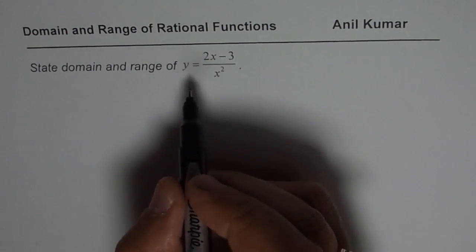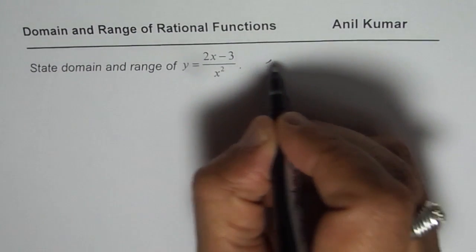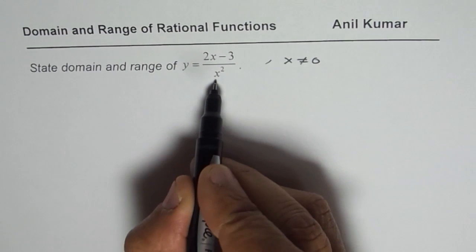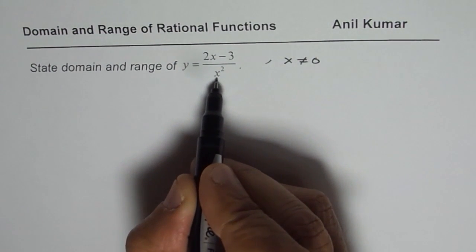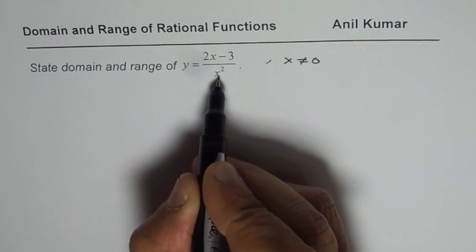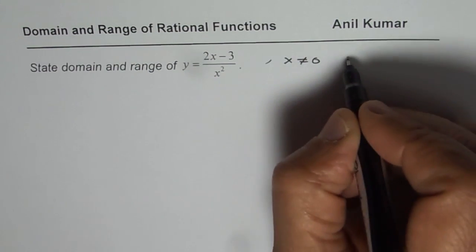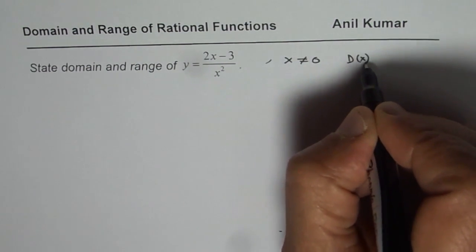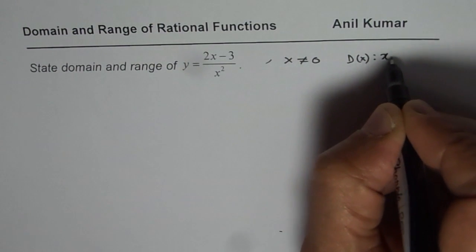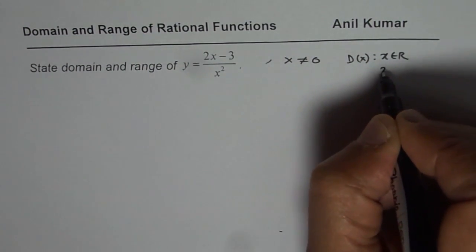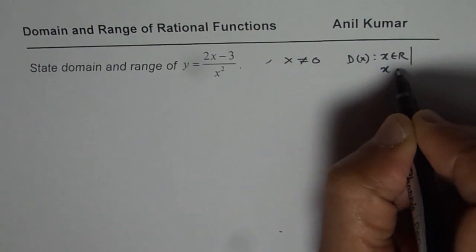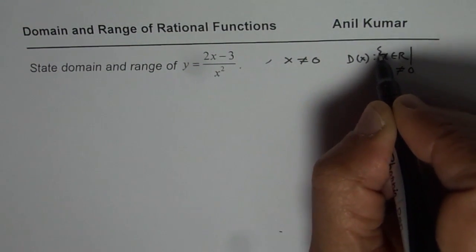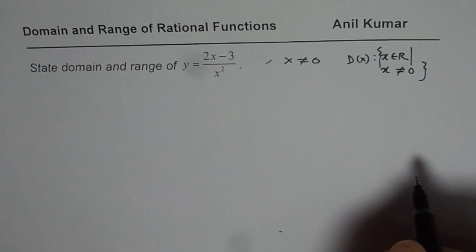As far as the domain is concerned, we know that x is not equal to 0 since if x squared is 0, then the denominator will have a 0 and that is not possible. It has a vertical asymptote at that point. So the domain here is D(x) = {x belongs to real numbers where x is not equal to 0}. That becomes the domain for the function.